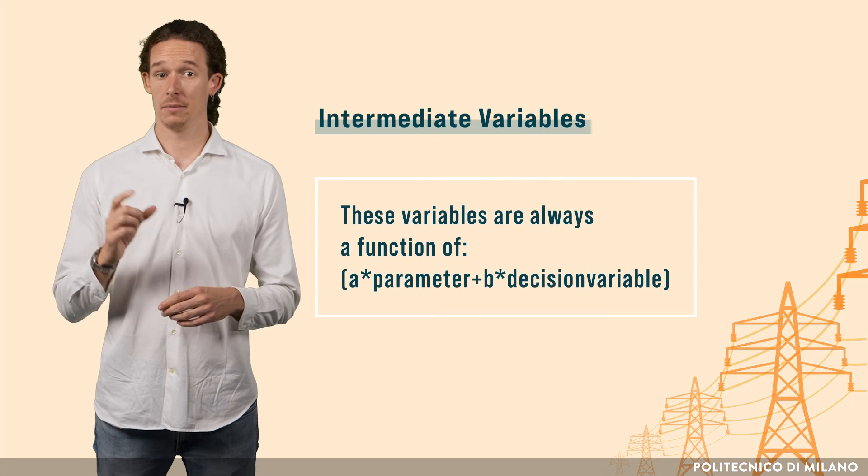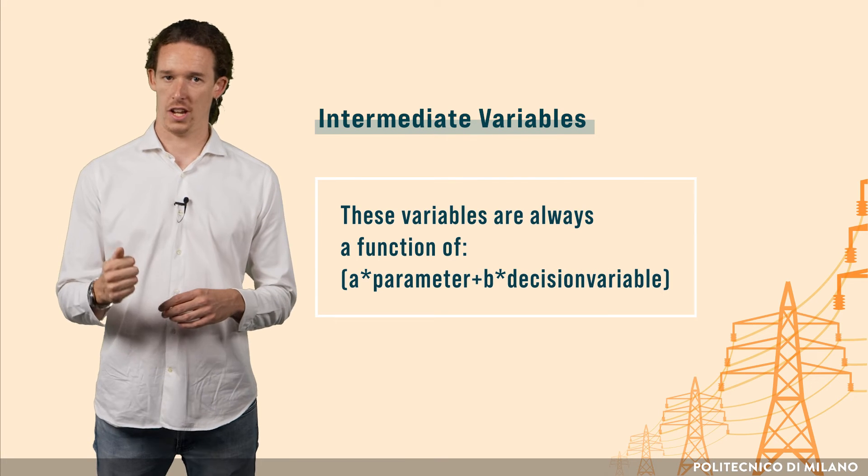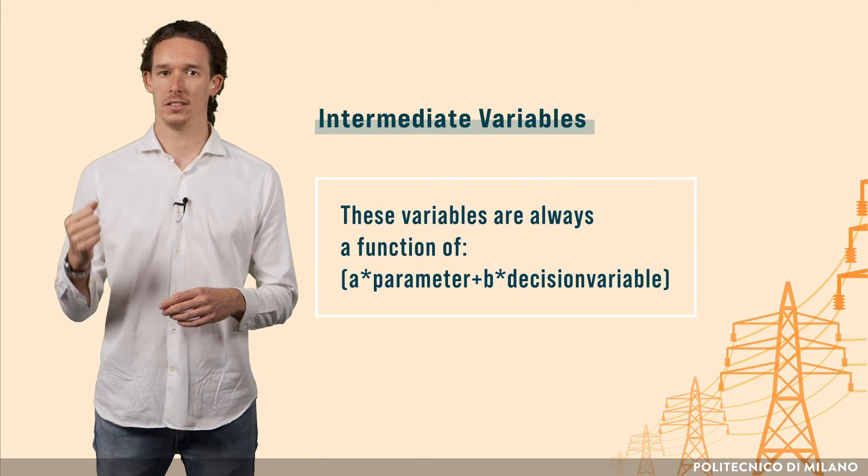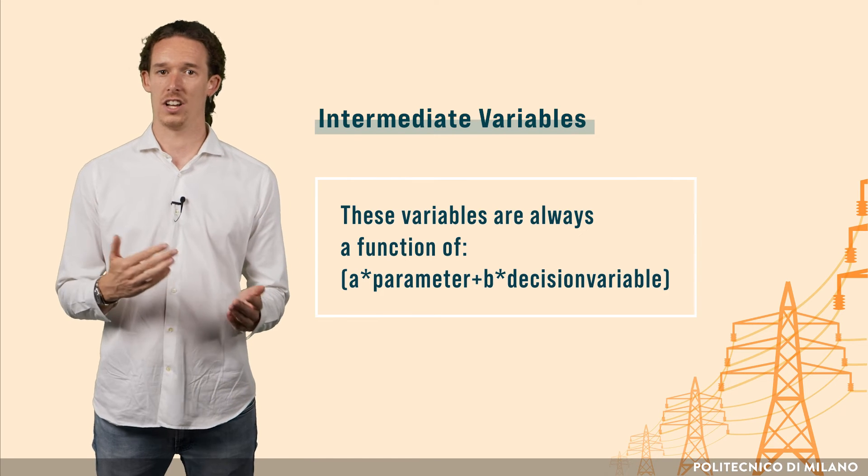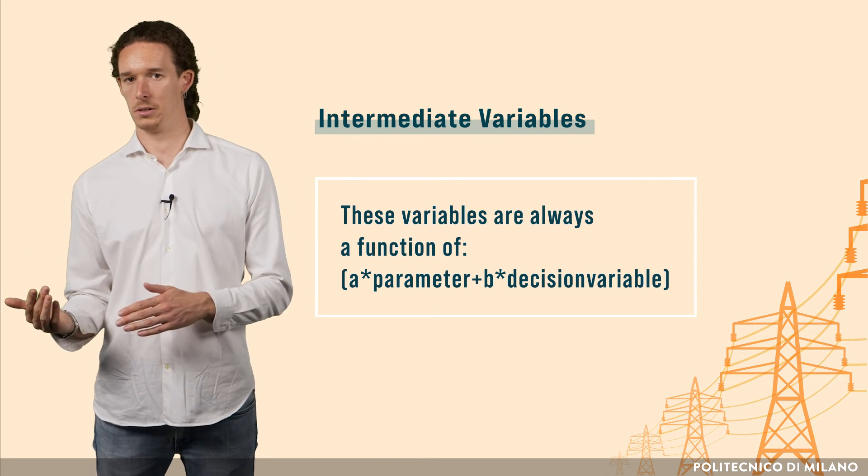All the other cells, in white, are the intermediate variables. They will change according to the change of the decision variables. They are, for example, the total capacity, that will change accordingly to the new capacity installed.